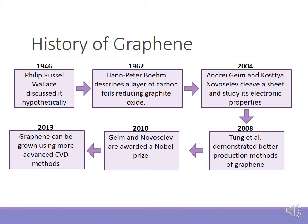Graphene was first proposed by Philip Russell Wallace, who discussed it hypothetically in 1946. Later, in 1962, Hanns-Peter Boehm described a layer of carbon foil he was able to create by reducing graphite oxide chemically. In 2004, Andre Geim and Kostya Novoselov cleaved a sheet of graphene from graphite and were able to study its electronic properties. After they published this paper, interest in graphene skyrocketed as a potential material for semiconductors. In 2008, Tang et al. demonstrated better production methods of graphene.